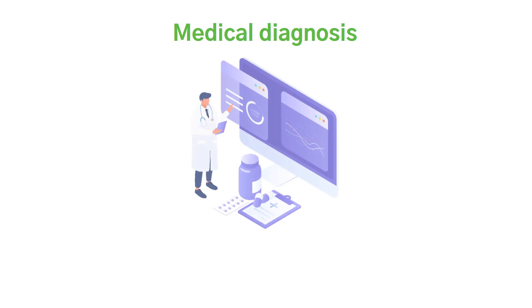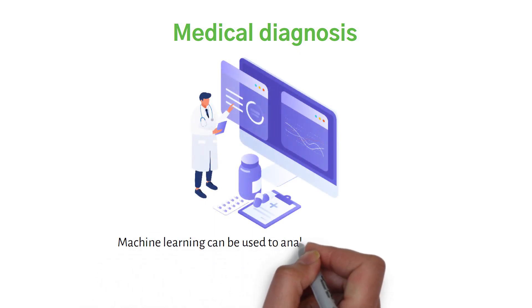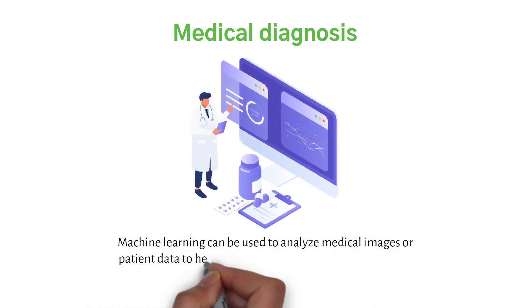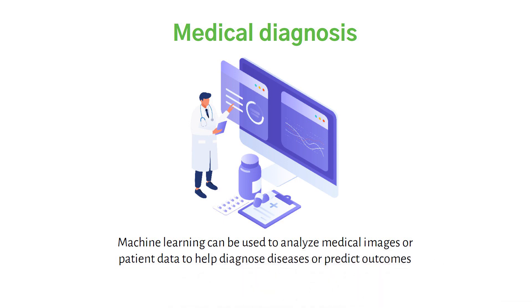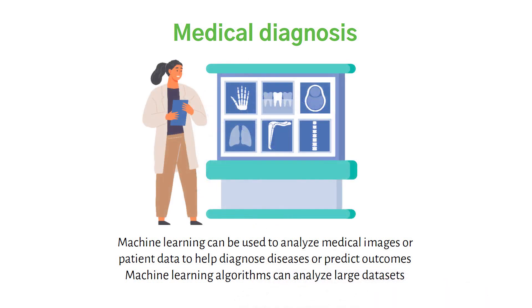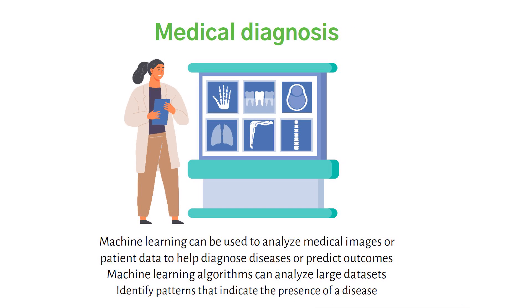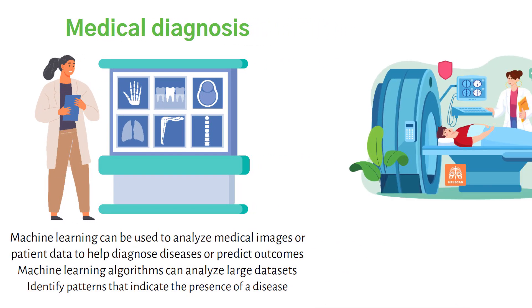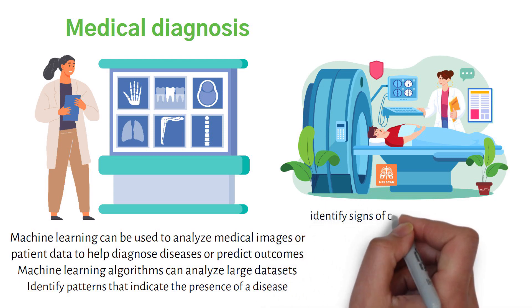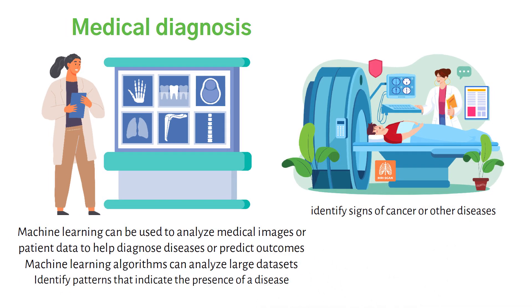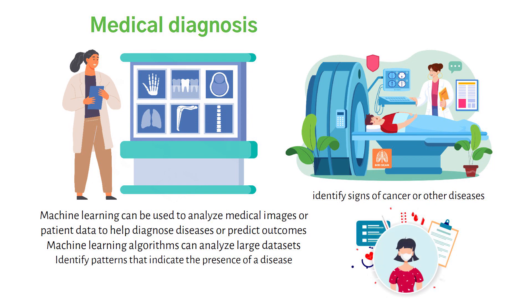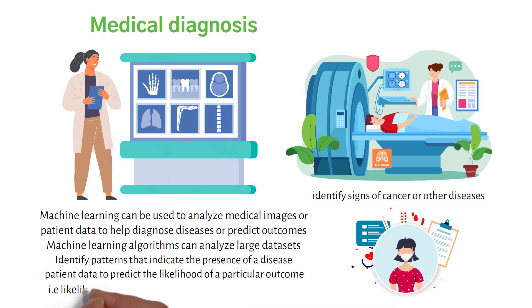Medical diagnosis: machine learning can be used to analyze medical images or patient data to help diagnose diseases or predict outcomes. Algorithms can analyze large datasets of medical images and identify patterns indicating the presence of a disease — for example, analyzing MRI scans to identify signs of cancer. In addition, machine learning algorithms can analyze patient data to predict the likelihood of a patient developing a particular disease.